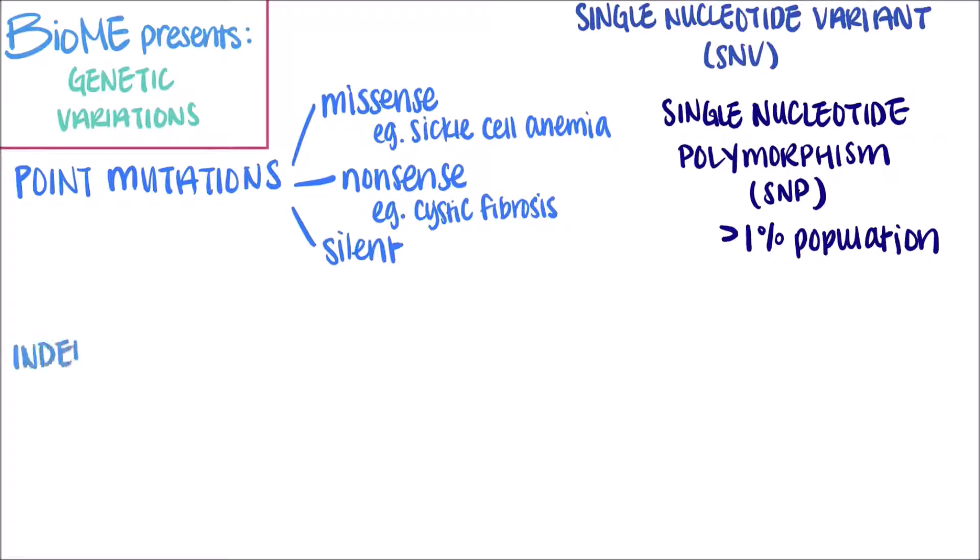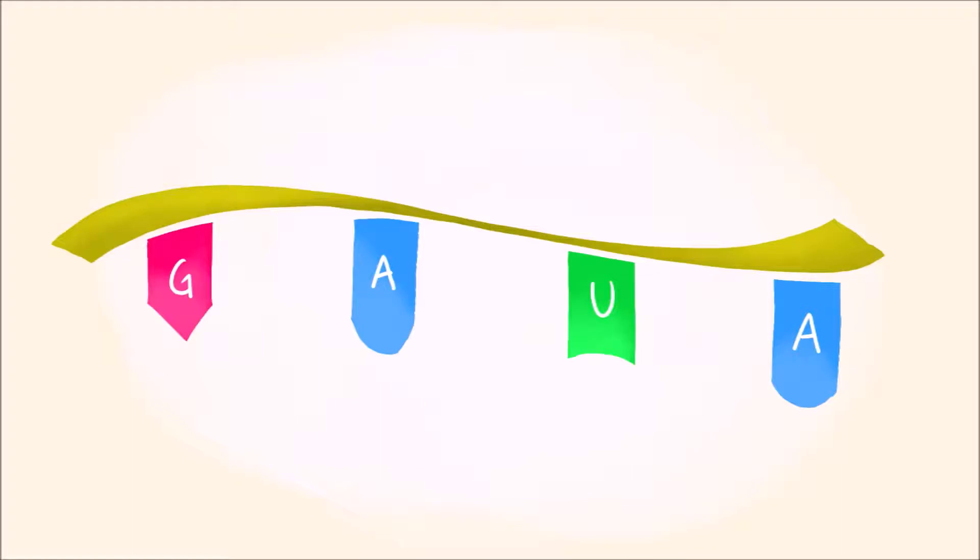Indels are another type of genetic variation. The word indel is short for insertions and deletions. The term is usually reserved for insertions and deletions of 1 to 1000 base pairs. Insertions occur when nucleotides are added into a sequence. So a single base insertion would be something like this. Of course, insertions can also be hundreds of base pairs long.